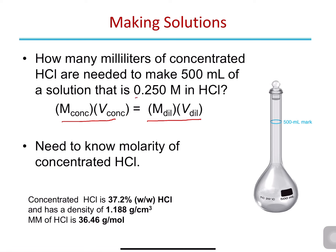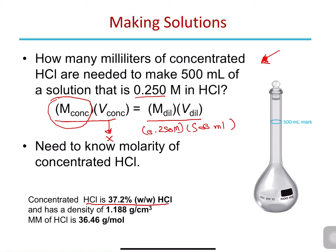We have M_diluted equal to 0.250 molar, V_diluted equal to 500 mL, and V_concentrated is what we need to find. However, this question doesn't directly give us M_concentrated — the concentration of the concentrated HCl solution. It just says 'concentrated HCl.' When we look at the bottle of concentrated hydrochloric acid, we find the following information: it is 37.2% weight per weight HCl, the density is 1.188 g/mL, and the molecular mass of HCl is 36.46 g/mol.